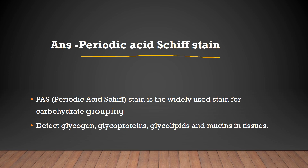PAS stain, or Periodic Acid-Schiff stain, is the widely used stain for carbohydrates. It detects glycogen, glycoproteins, glycolipids, and mucin in the tissues.